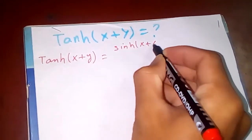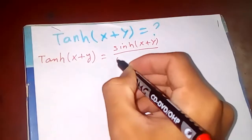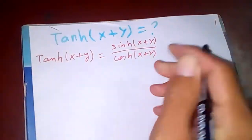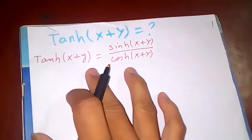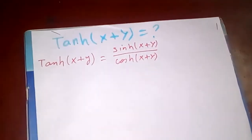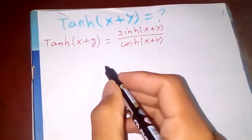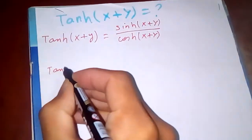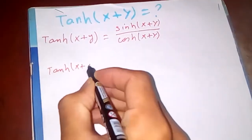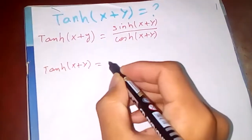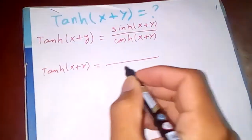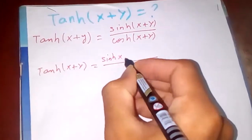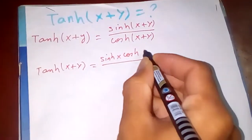So tanh(x+y) is the same as sinh(x+y) divided by cosh(x+y), which is the same as our trigonometric function. We know that sinh(x+y) is nothing but sinh(x)·cosh(y)...